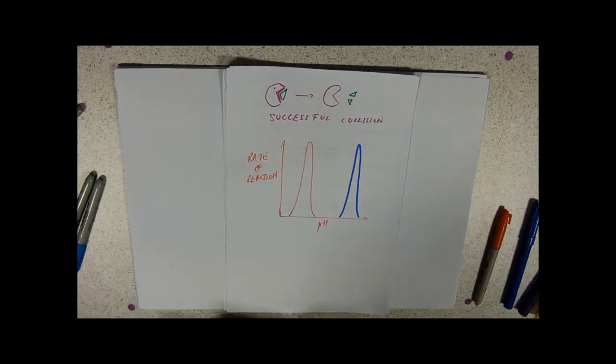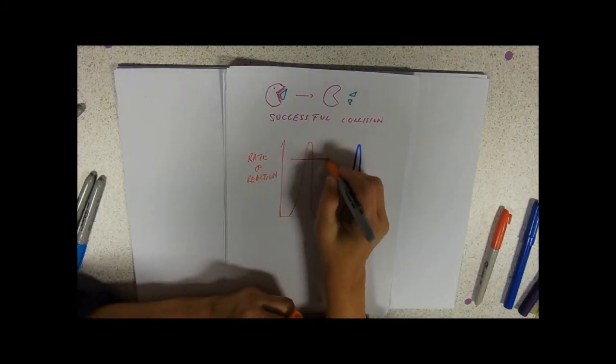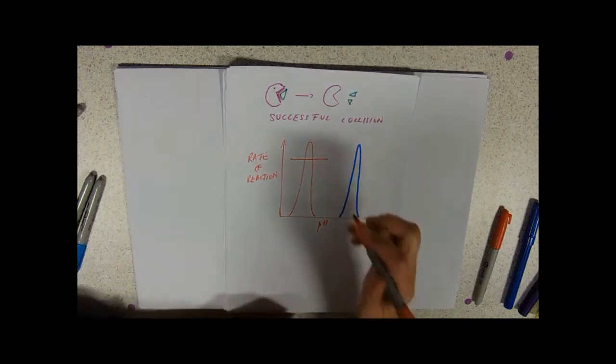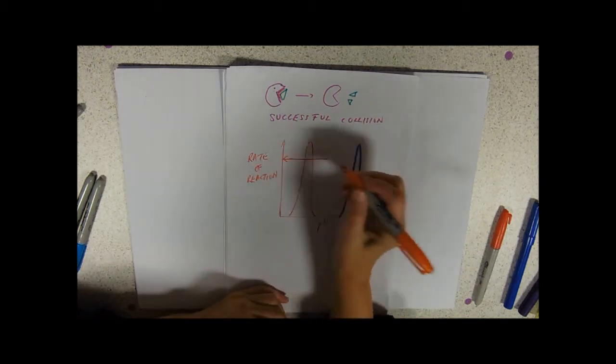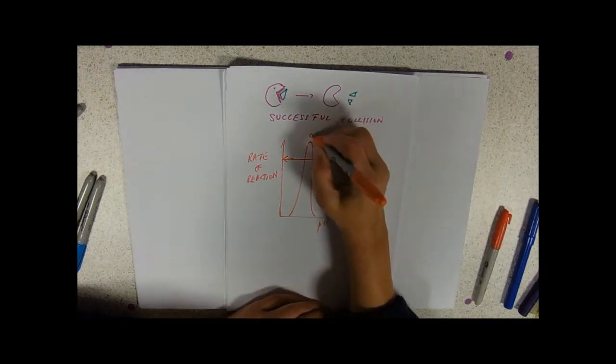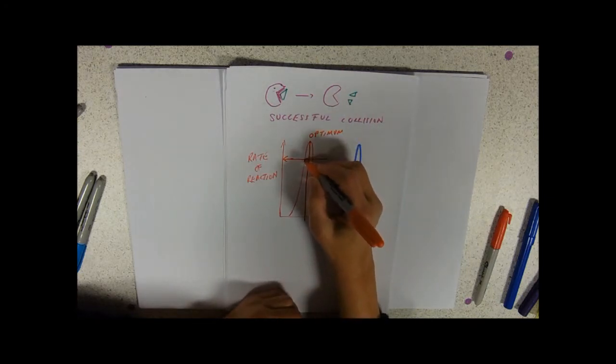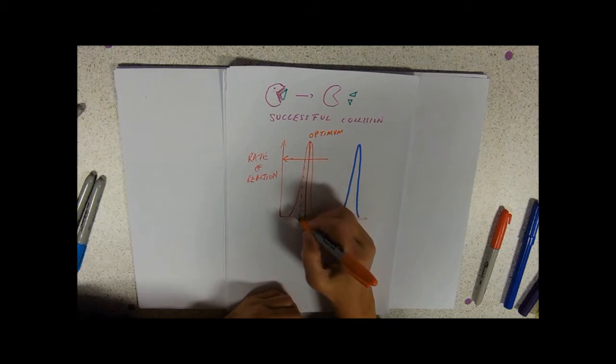And anything that disrupts that shape of the active site will pretty much slow down these successful collisions. So if you look at our graph here, that enzyme is still working pretty well. And again with pH and temperature we can talk about optima, so either side of the optimum, if it's only deviating a little bit, it's still working pretty well.